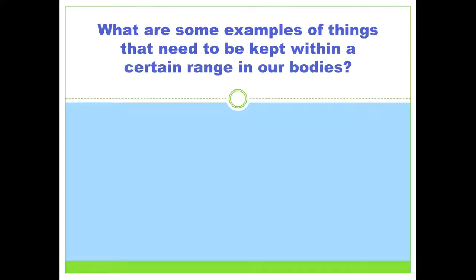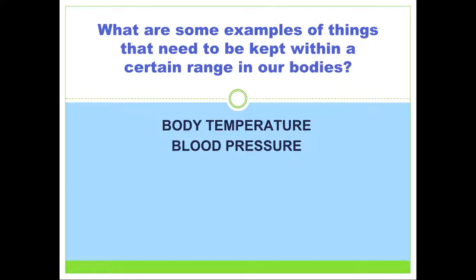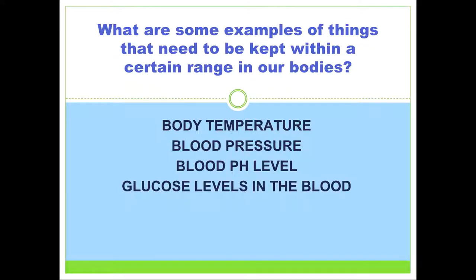Let's look at some examples of things that need to be kept within a certain range: body temperature, blood pressure, making sure oxygen and carbon dioxide can get to every single cell in your body so they can function properly. Blood pH level relates back to the oxygen and CO2 levels within the blood. Glucose levels within the blood. And osmoregulation — the water within our body. You should have already learned about osmosis with the cell membrane, so how water moves down the concentration gradient across a membrane.